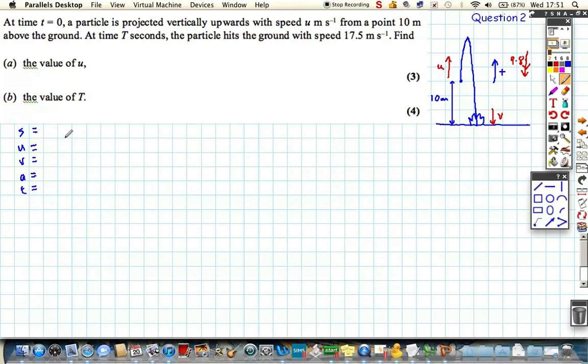So if we write out SUVAT, we start off, well, we want to find out, we're starting 10 metres off the ground, we're going to find out when it actually hits the ground. So we're going to find out when it hits 10 metres below its starting point, and we simulate that by saying minus 10. Again, up is positive, so we want to find out when it ends up. Displacement of 10 below its starting position.